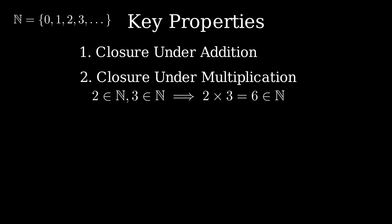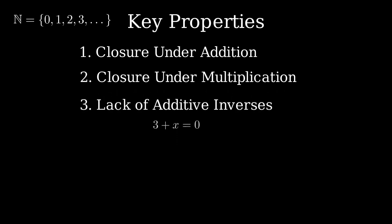But whole numbers are limited in other ways. They lack additive inverses, for instance. There is no whole number you can add to 3 to get 0. The answer would be negative 3, which is not in the set. Similarly, they lack multiplicative inverses. There's no whole number you can multiply by 3 to get 1, because the answer is 1 third, and that's not a whole number either.